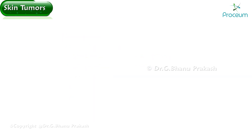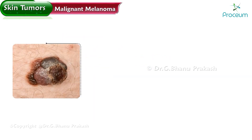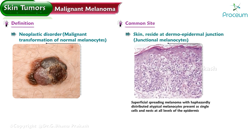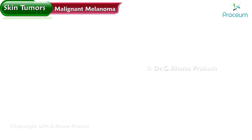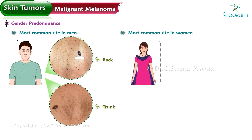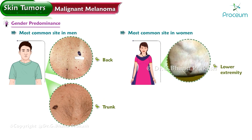Malignant melanoma is a neoplastic disorder resulting from the malignant transformation of normal melanocytes. It most commonly originates in the skin, where melanocytes reside at the dermal-epidermal junction, specifically in junctional melanocytes. The most common site in men is the back and trunk, while in women it is the lower extremity.